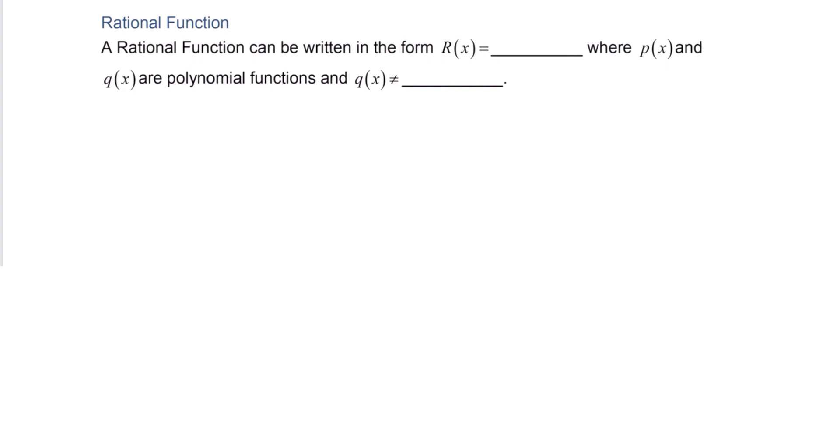A rational function can be written in the form r of x equals p of x divided by q of x, where p and q are polynomial functions and q is not equal to 0.